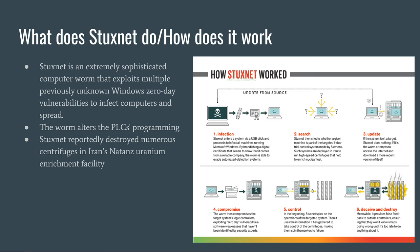While this is happening, the PLCs tell the controller computer that everything is working fine, making it difficult to detect or diagnose what's going on until it's too late. Stuxnet reportedly destroyed numerous centrifuges in Iran's uranium enrichment facility by causing them to burn themselves out. Over time, other groups modified the virus to target facilities including water treatment plants, power plants, and gas lines.